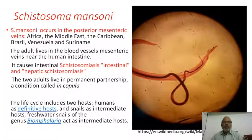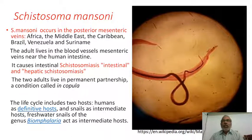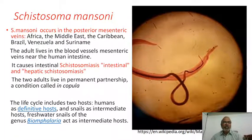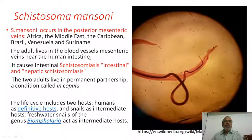The life cycle of Schistosoma mansoni includes two hosts. The definitive host is the human being — a host is called definitive because the parasite completes its sexual life cycle within it. The host in which the parasite undergoes larval or asexual development is called the intermediate host. In this case, the intermediate host is a freshwater snail called Biomphalaria, which acts as the intermediate host for S. mansoni.